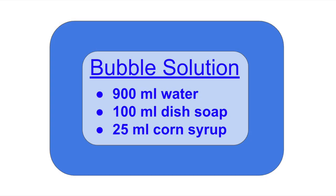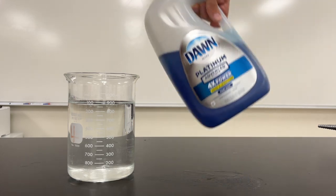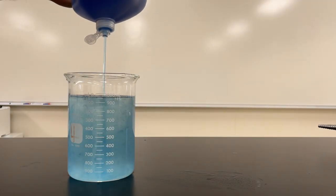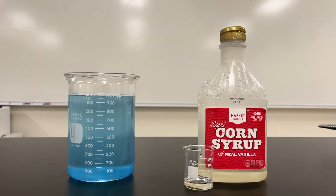It's very easy to make the solution with the water, dish soap, and corn syrup. First, just fill a beaker to 900 milliliters of water, and then keep adding dish soap until you get up to a thousand milliliters.